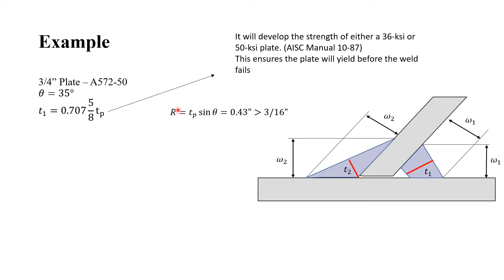First of all, we must calculate the root opening, which equals the thickness of the plate times sine of the skew angle. And we have 0.43 inches. Because this dimension is larger than 3/16 inches, we must bevel the plate as shown in the picture.